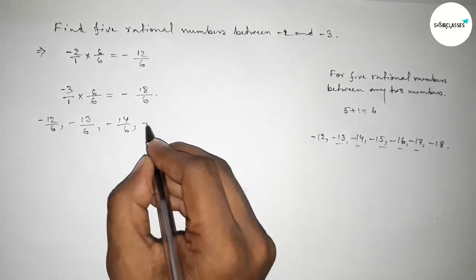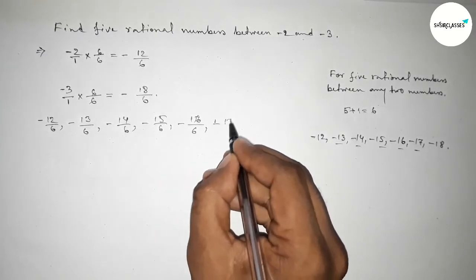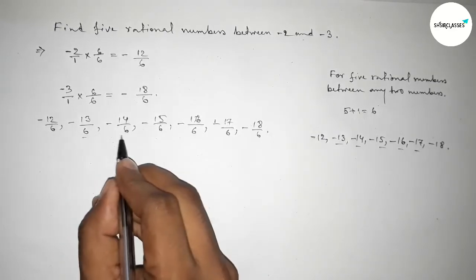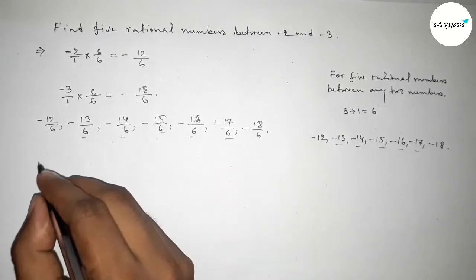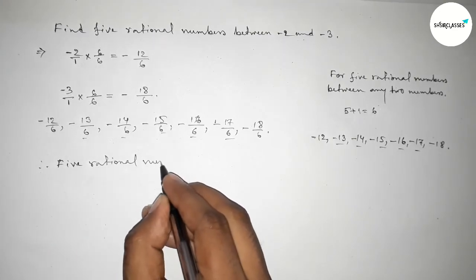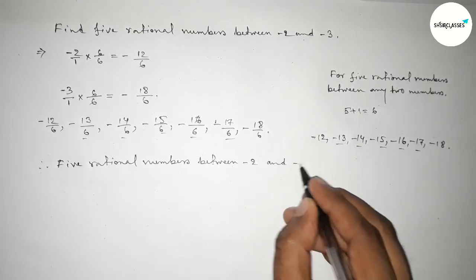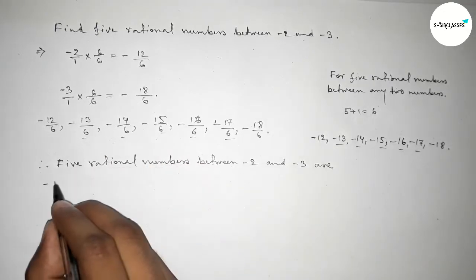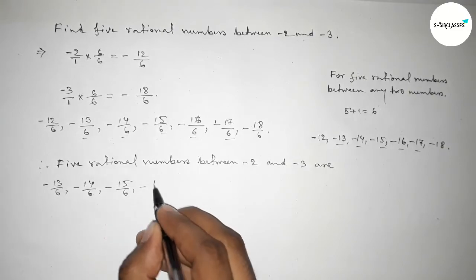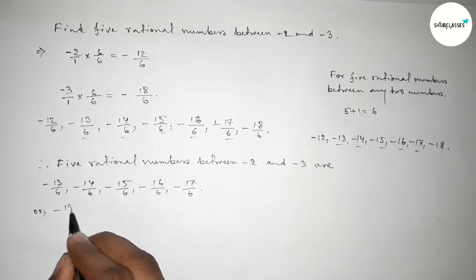Now write down all the rational numbers here: minus 12 over 6, minus 13 over 6, minus 14 over 6, minus 15 over 6, up to minus 18 over 6. Among these, the required five rational numbers between minus 2 and minus 3 are: the first one is minus 13 over 6.